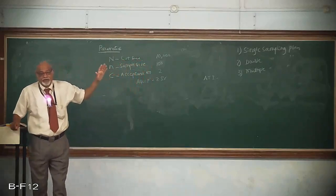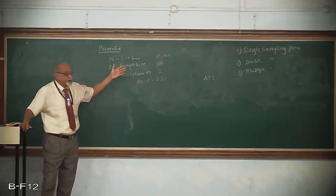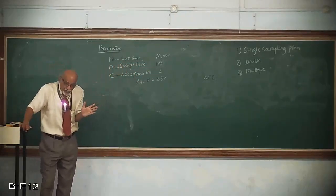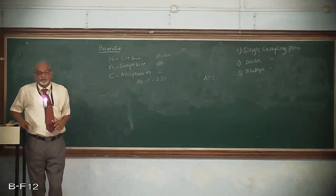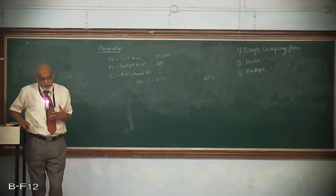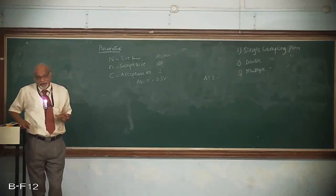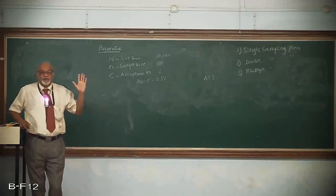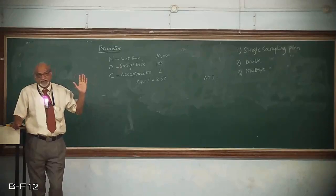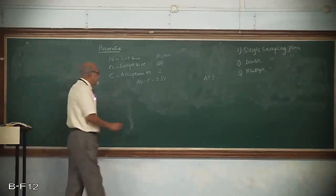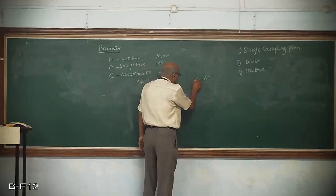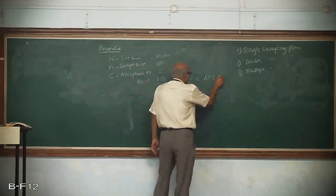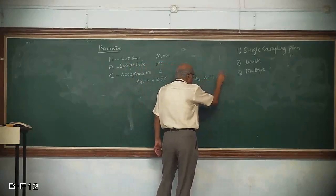Average total inspection has got two extremities: one is sample size n, and another is lot size N. In this example, it may vary between 100 to 10,000. The average total inspection is greater than or equal to n and less than or equal to capital N per lot. This is the correct relationship. Some objective-type questions might be asked on this.